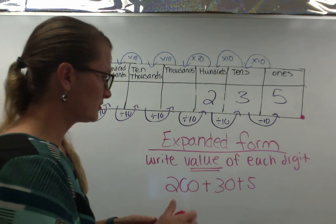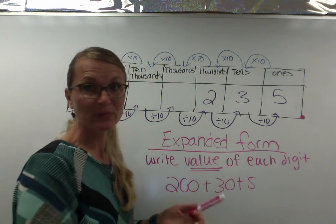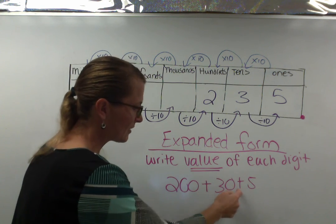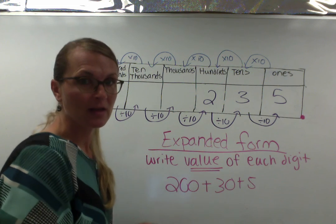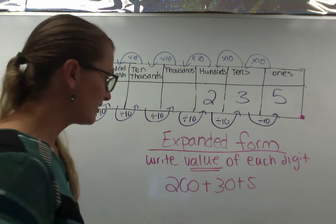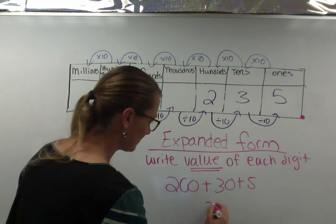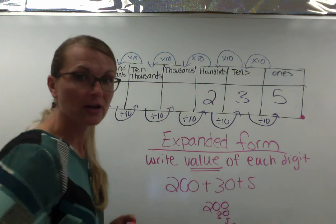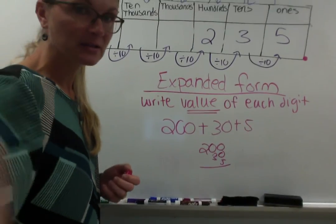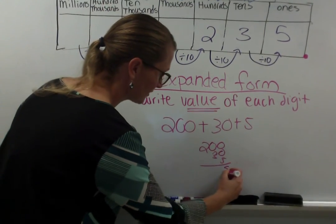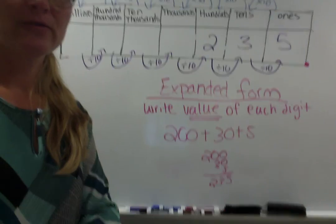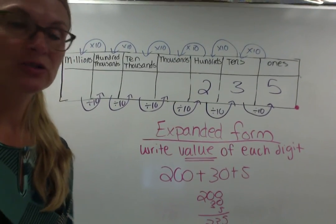But just like we would when we did distributive property, when we pulled something apart, when we're done, we have to add it back together again. How do you know you have the right expanded form? Well, if you add it back together again, if you add 200, 30, and 5 back together, if you have the correct expanded form, you're going to get 235, which is the number you started with. Kind of similar to how we do distributive property.